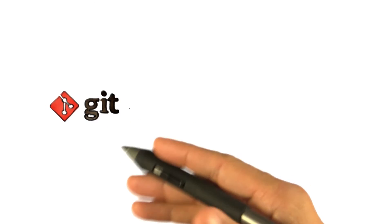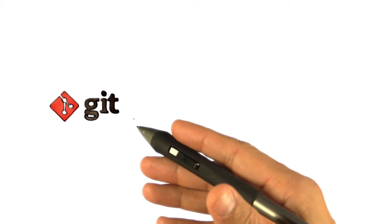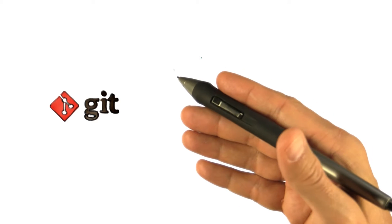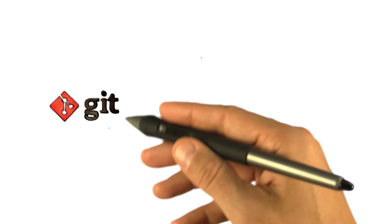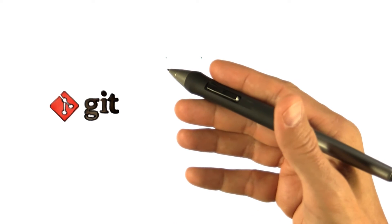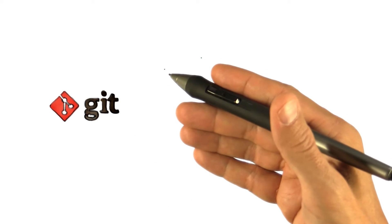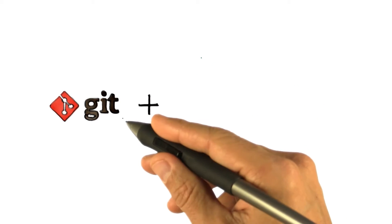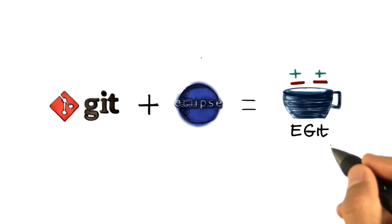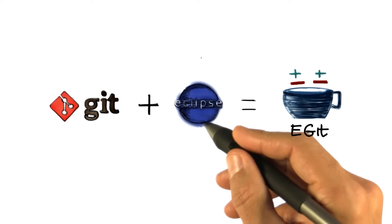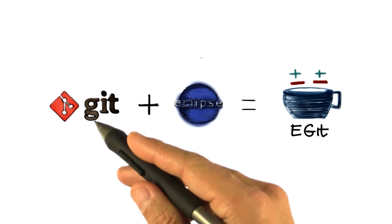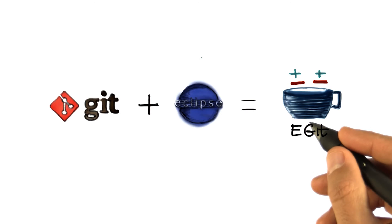Now that we saw some of the Git basic functionalities in practice, let's go a step further. Many of these version control systems are actually integrated into IDEs. So what we're going to look at next is what happens if we put together Git and Eclipse — the result is eGit, which is a plugin for the Eclipse IDE that adds Git functionality to Eclipse. Let's see how that works in practice.